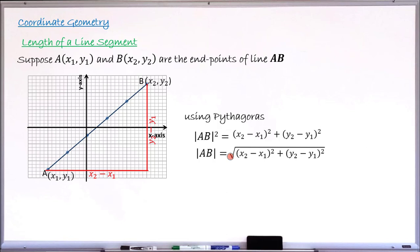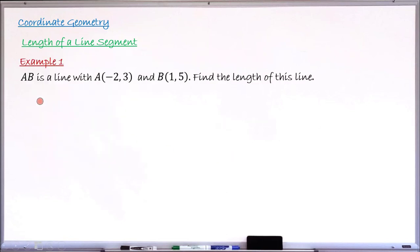Example number one: we have line AB where the coordinate of A is (−2, 3) and the coordinate of B is (1, 5). The question asks us to find the length of that line segment AB. The solution is to write down the formula used to find the length of a line segment.